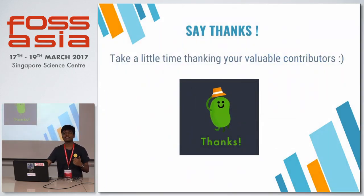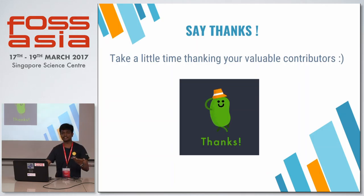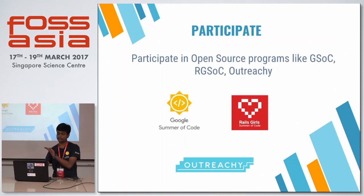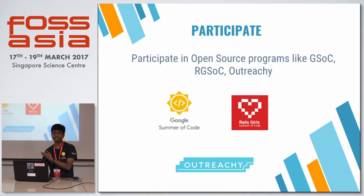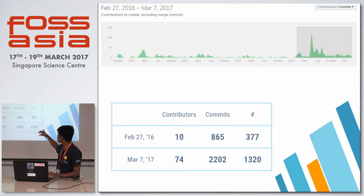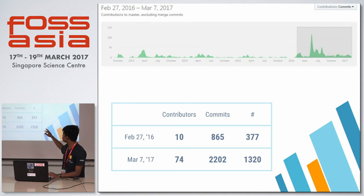Say thanks — whenever you merge a pull request, say thanks and take some time; you can even tweet to the contributor. And participate in events like Google Summer of Code, Rails Girls Summer of Code, and Outreachy. Participate in them and expand your projects. Here are some stats showing how we reached so many contributors within just a few months, within about one year.